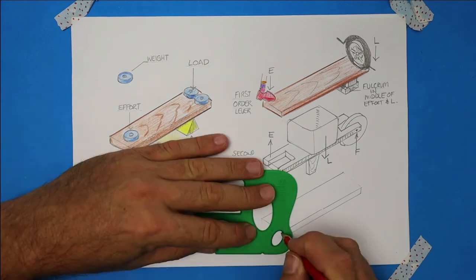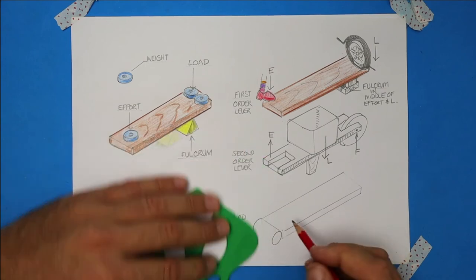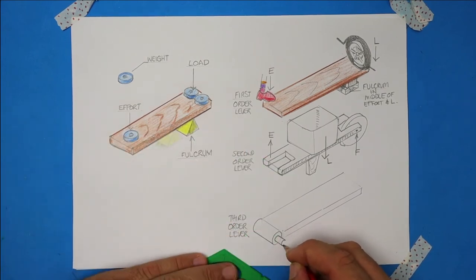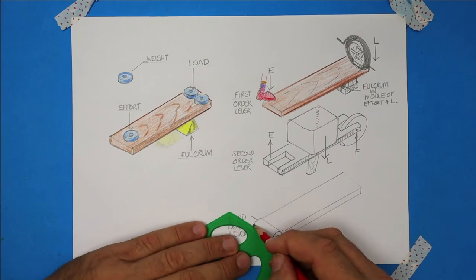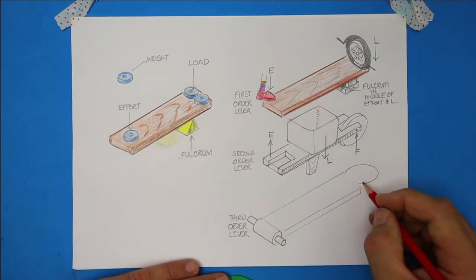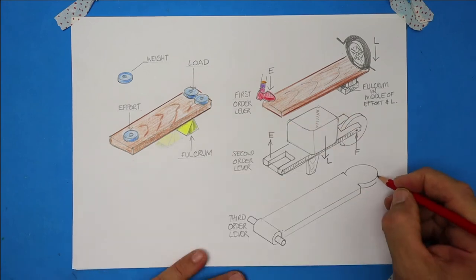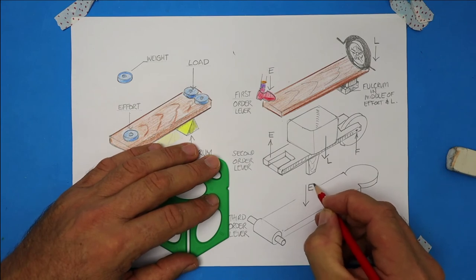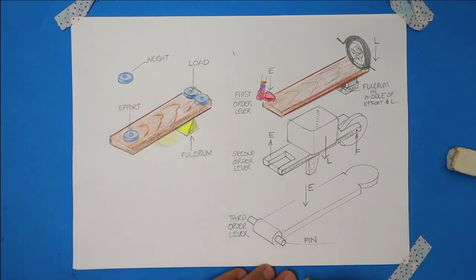Next, at this end, I'm drawing or attaching a cylinder and I'm putting a pin right through the middle so that it can swing or pivot on the pin. At this end, I'm drawing a fly swatter. Here in the middle is where I'm going to push. That's my effort. And the pin is going to act as my fulcrum.